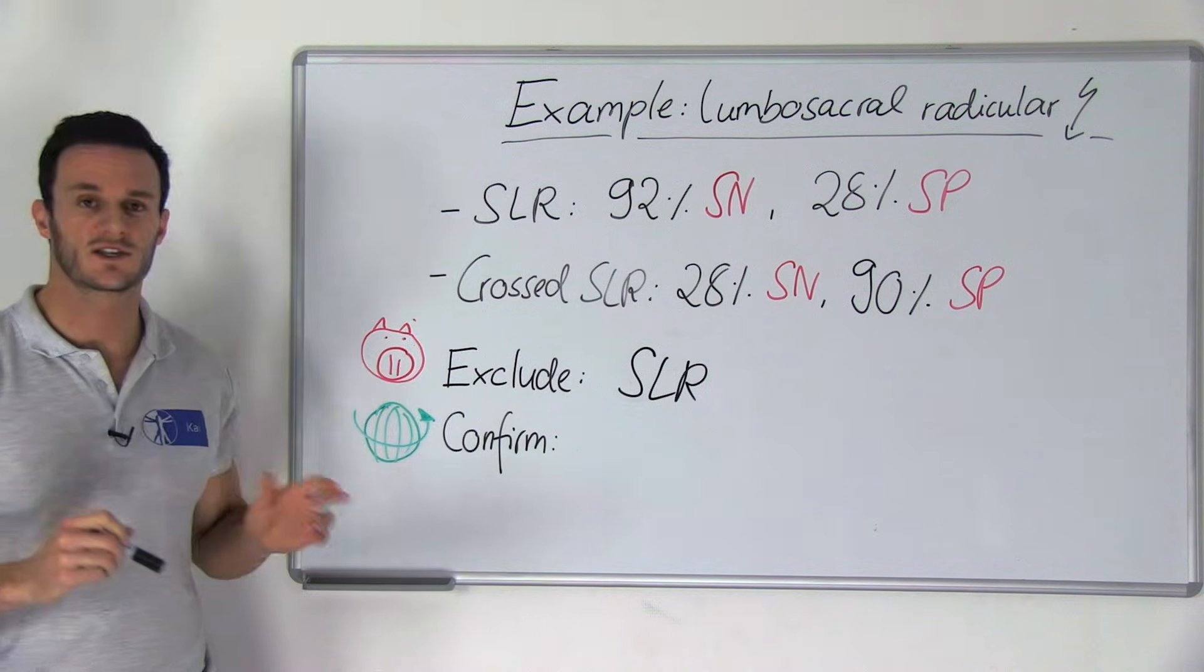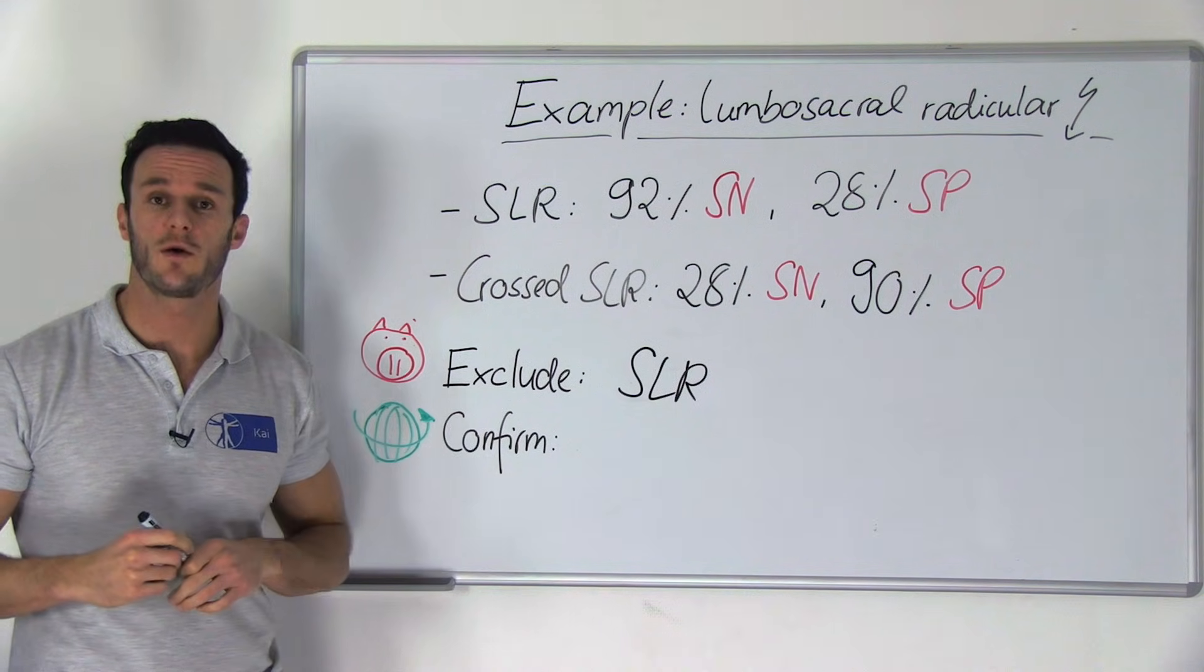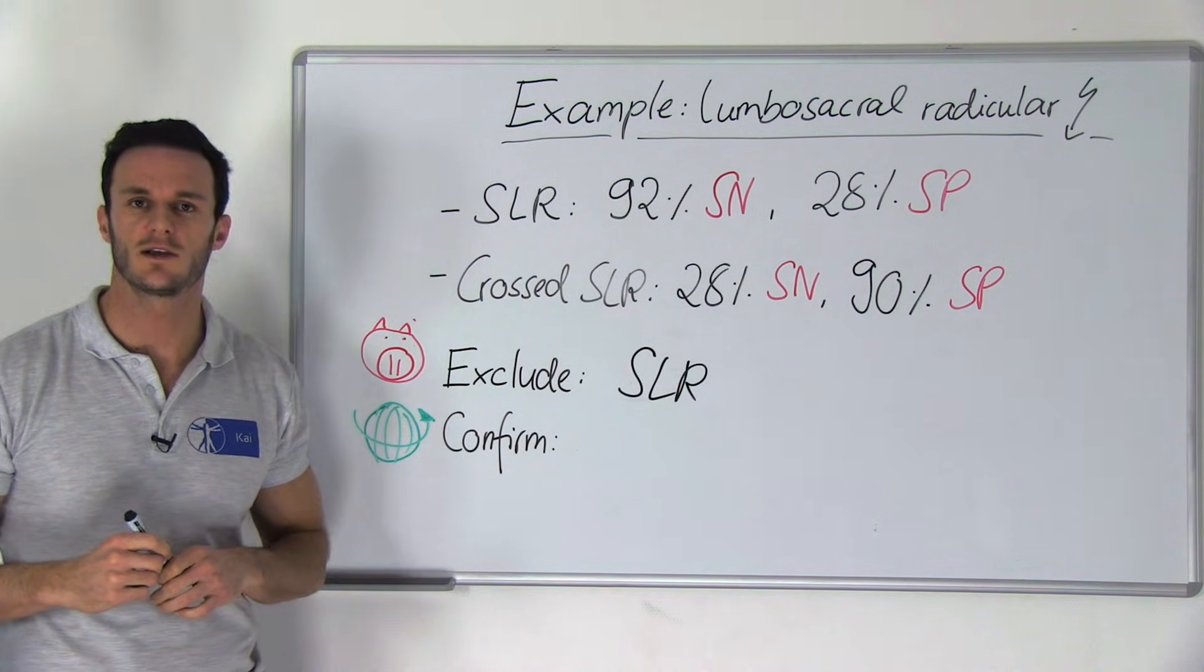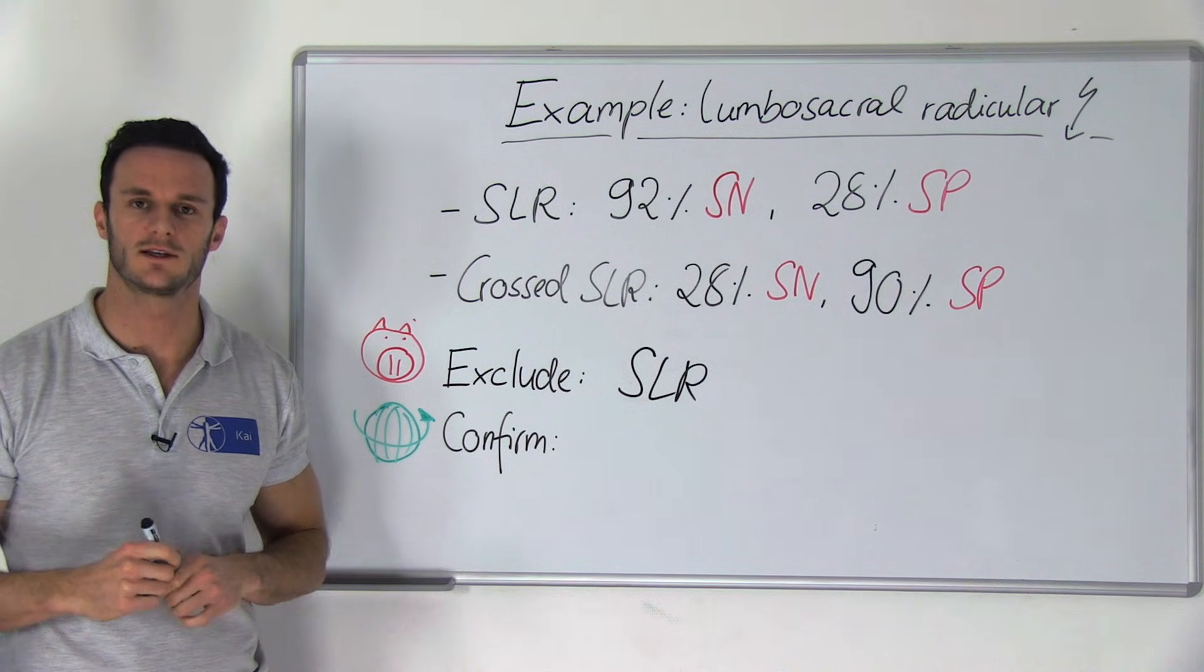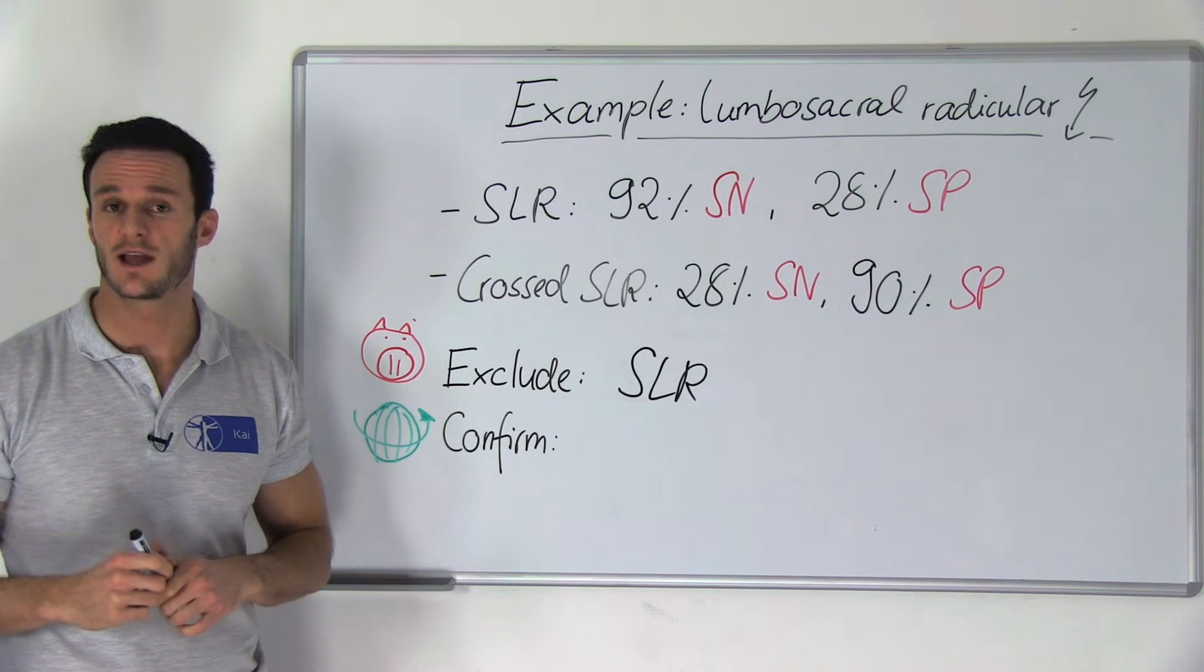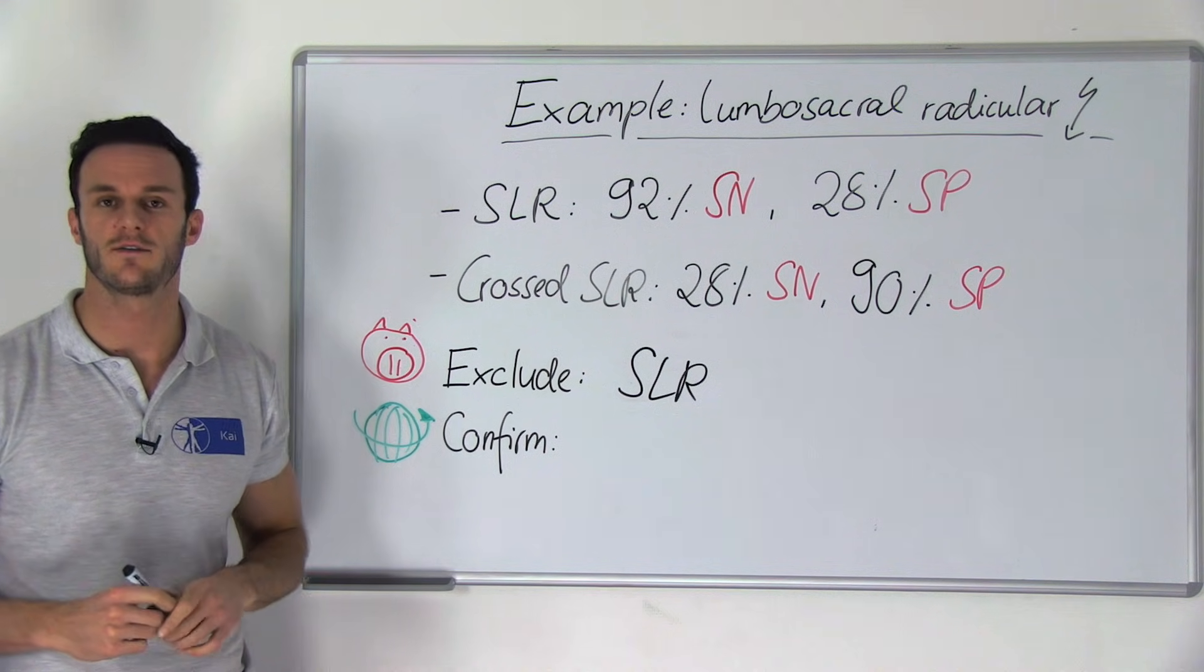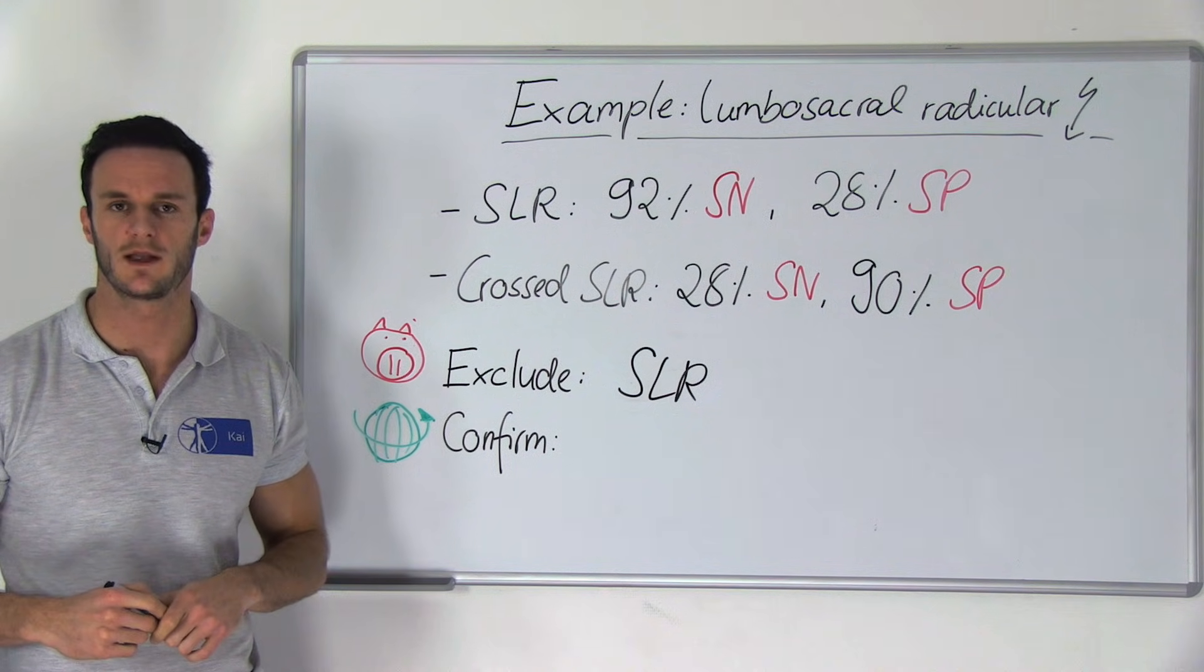Remember our mnemonic SNOUT. We are performing a highly sensitive test in order to look for a negative test outcome to rule out a disease. If this test is negative, we can be pretty sure that our patient does not have lumbosacral radicular pain.